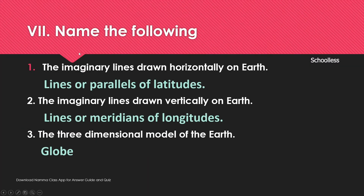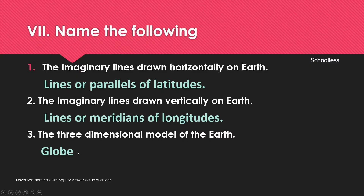Name the following: The imaginary lines drawn horizontally on Earth are called lines or parallels of latitude. Lines drawn vertically are called meridians or lines of longitude. The three-dimensional model of Earth is called a Globe, and its shape is called the Geoid.